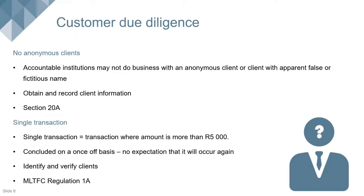The FIC Act talks about a single transaction — defined as a transaction where an amount is more than R5,000 — as opposed to a business relationship, which is a longer-term relationship between the accountable institution and its client. A single transaction is concluded on a once-off basis with no expectation of seeing the client again. You still have to identify and verify the client's information. Regulation 1A of the Money Laundering and Terror Financing Control Regulations explains the single transaction requirement. Our Guidance Note 7 also states that accountable institutions must obtain at least basic information on the client even for single transactions below R5,000.